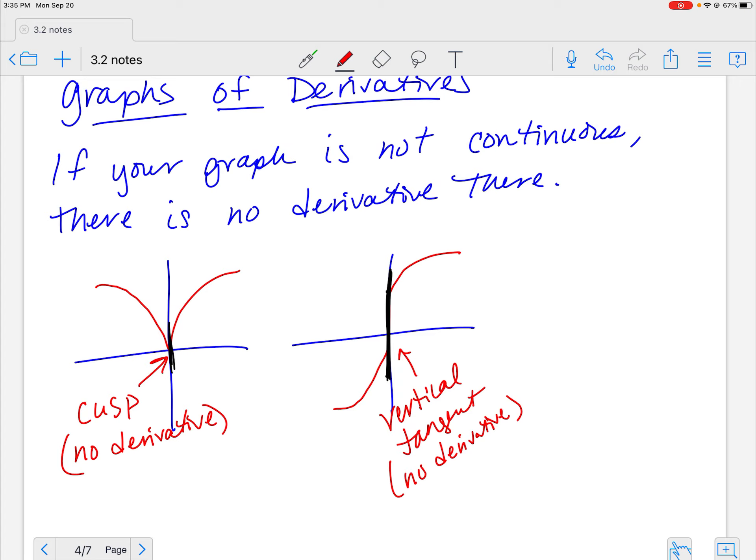These are important things to figure out here because it makes a huge impact, especially whenever you get into graphing these, which we will. Also, if I have some graph that comes up like it comes along and then it comes to a point, same concept. That's a cusp. And there's no derivative at that cusp.